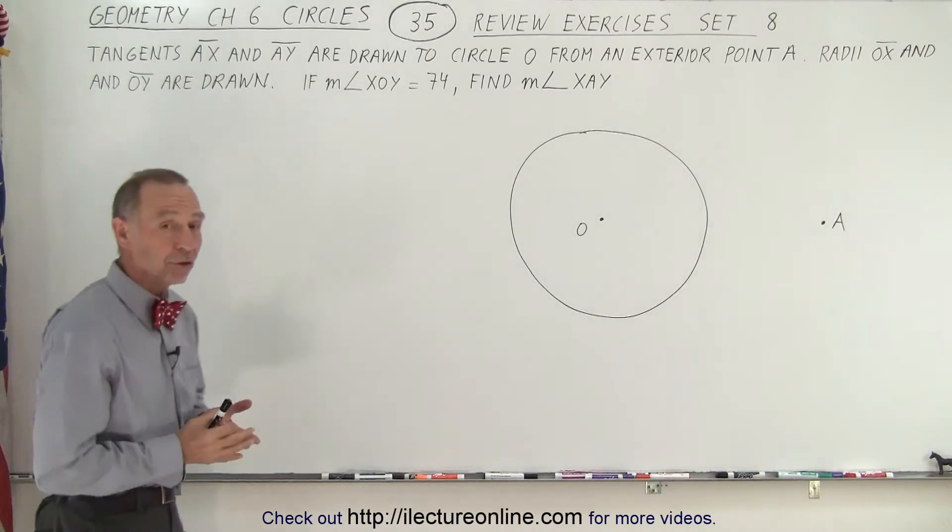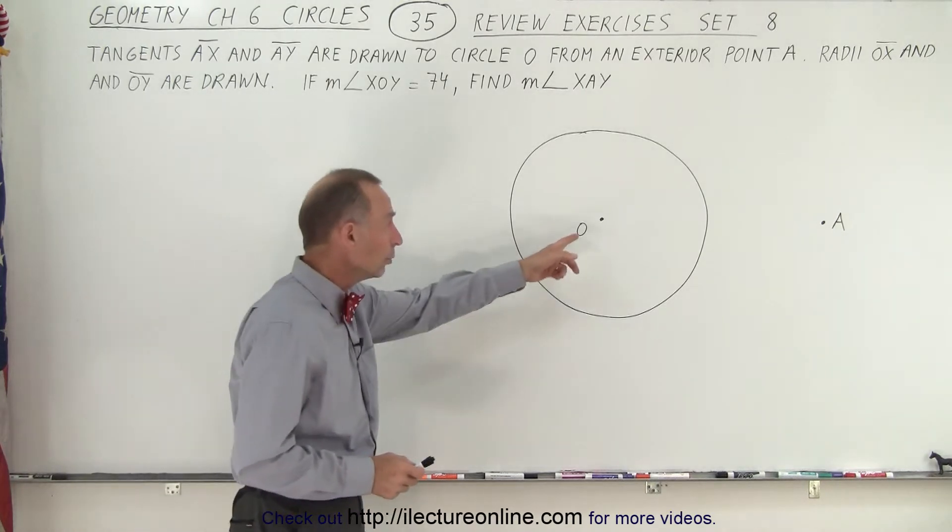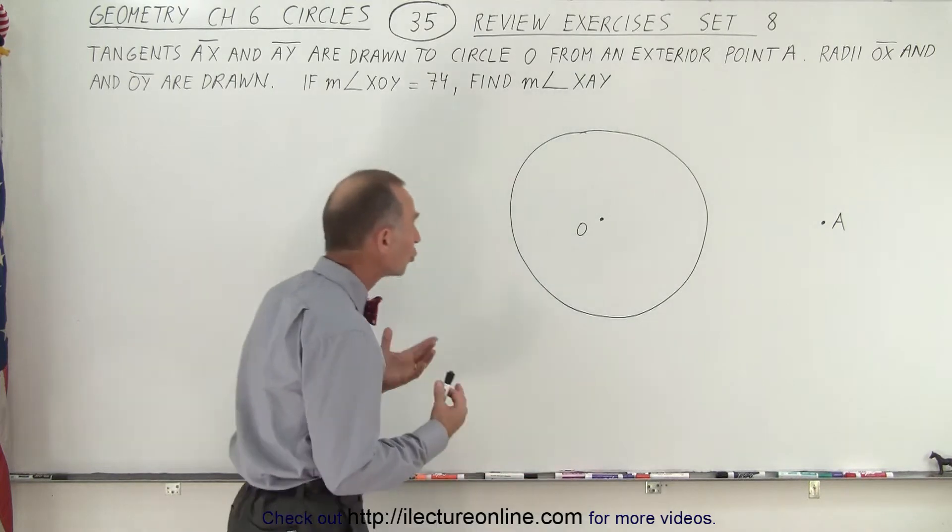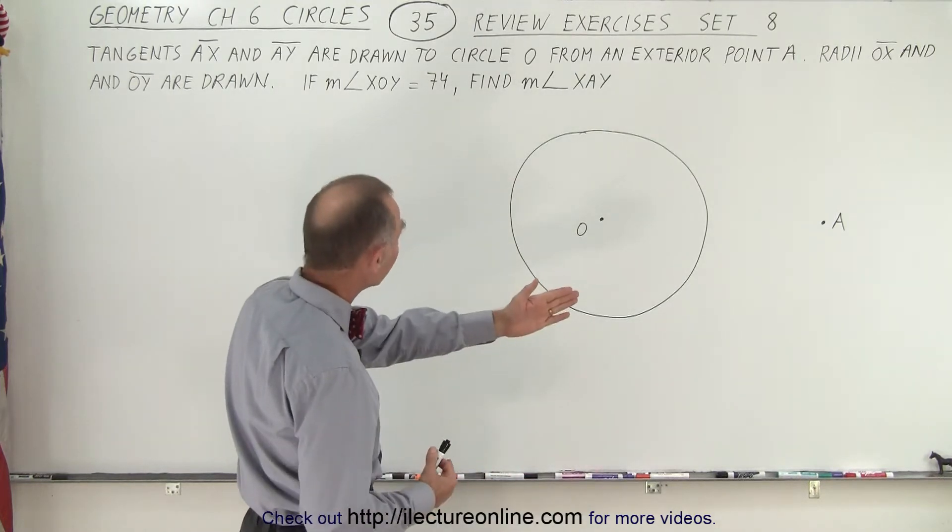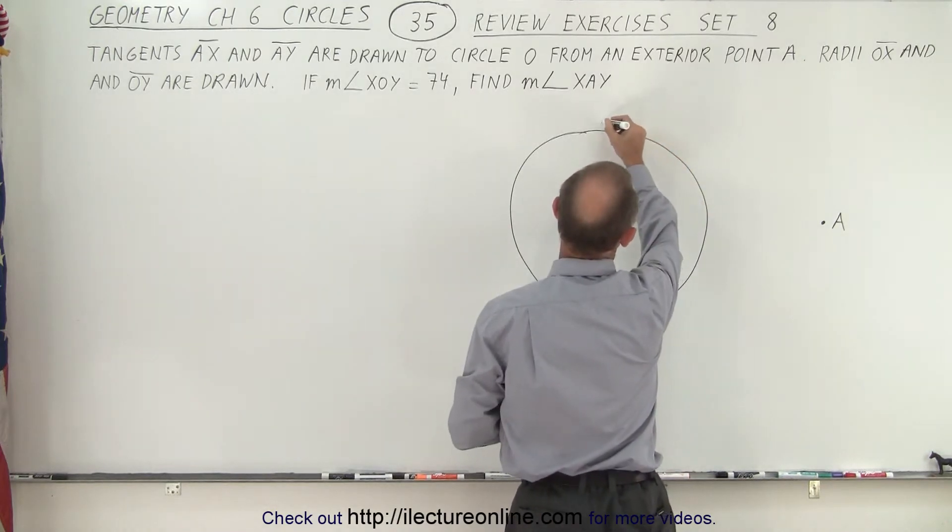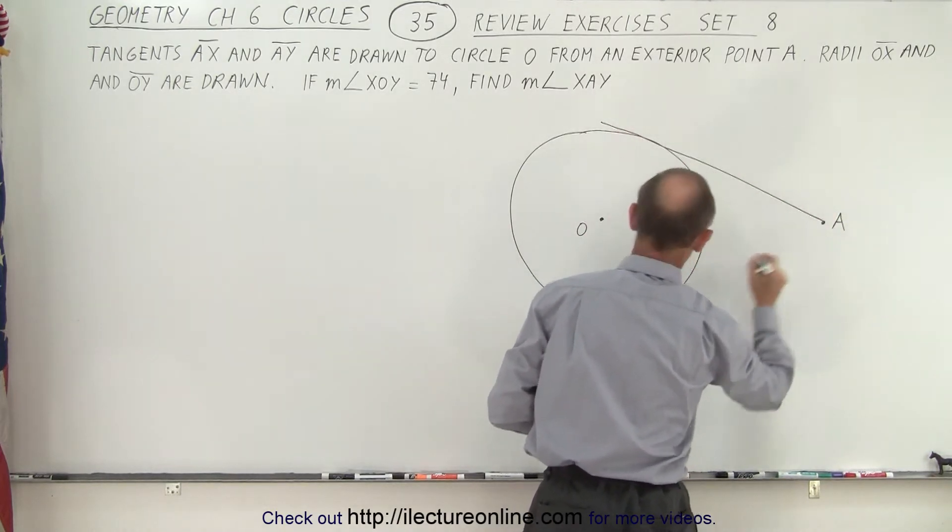So I've already drawn a circle, marked it as circle O because that's where the center of the circle is and there's an exterior point A. So now we have to draw two tangents from the exterior point A to the circle. So let's draw one like this and one like this.